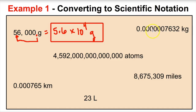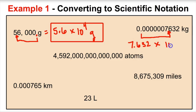Next example: 0.0000007632 kilograms. We move the decimal between the 7 and the 6 to get 7.632 — a number between 1 and 10. We had to move the decimal seven times, and since this number is less than 1, the sign is negative. So the answer is 7.632 times 10 to the negative 7th.